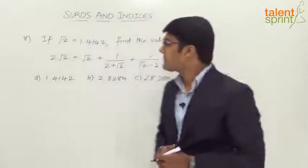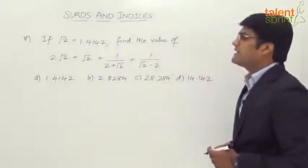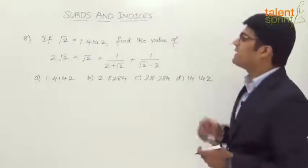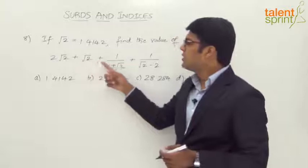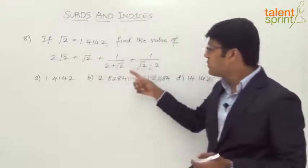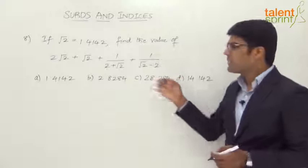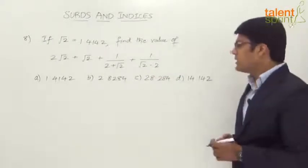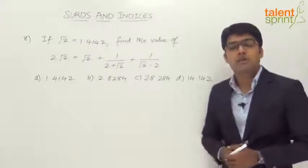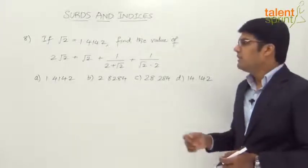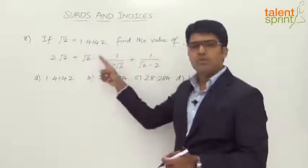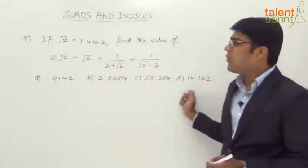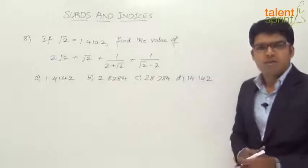Let us now look at question number 8. It says: if √2 = 1.4142, then find the value of 2√2 + √2 + 1/(2 + √2) + 1/(√2 − 2). The four answer options are 1.4142, 2.8284, 28.284, and 14.142. We need to simplify this expression and find the numerical value based on the given answer options.